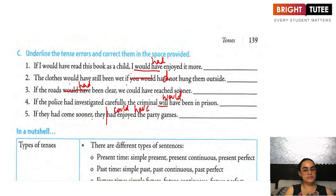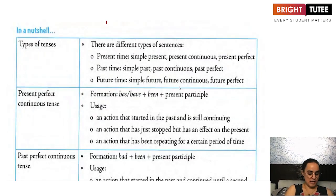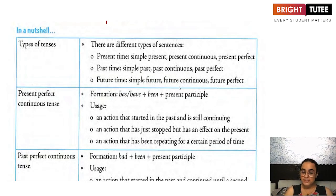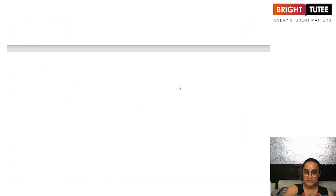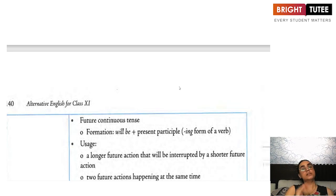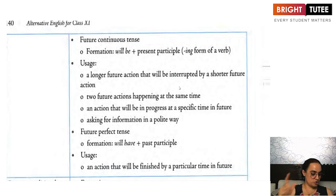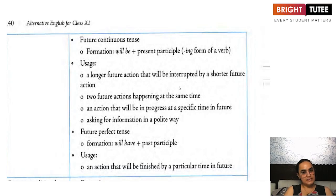So my dear students, in this chapter on tenses, we learnt about the different types of tenses — namely the present, the past, and the future — including the present perfect tense, present perfect continuous tense, and the usage of all tenses. At the end, we also learnt about the conditional tenses: the present conditional, the hypothetical conditional, and the past conditional, as well as the sentence structure of each one. With this, we come to the end of this chapter. I hope the topic was clear to you.